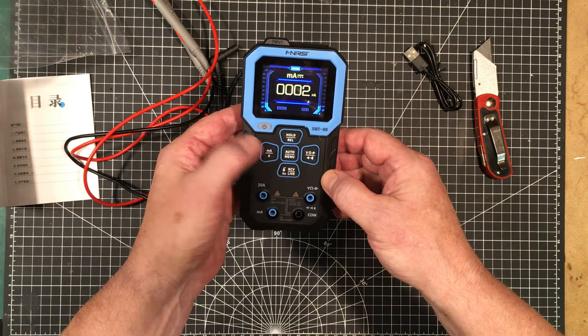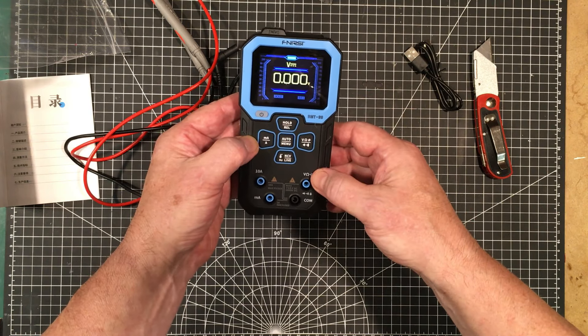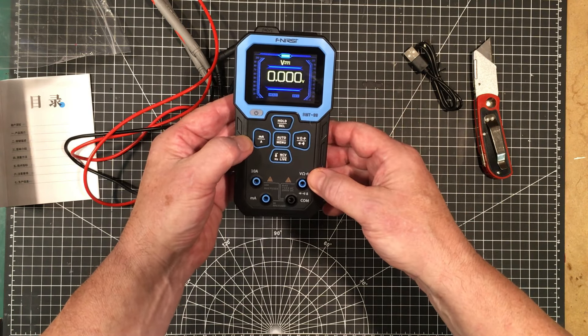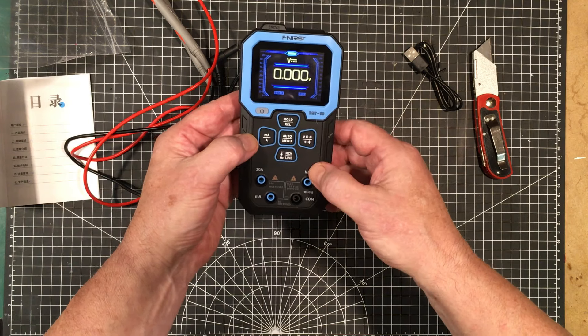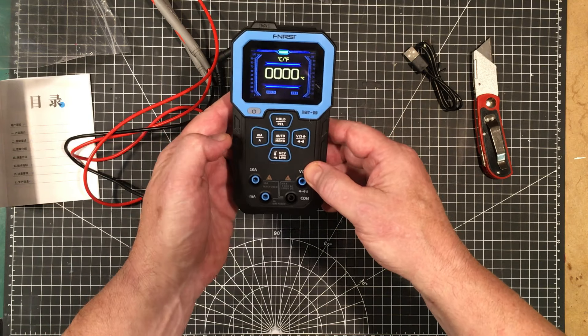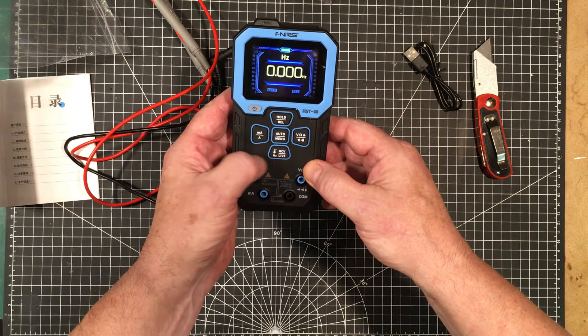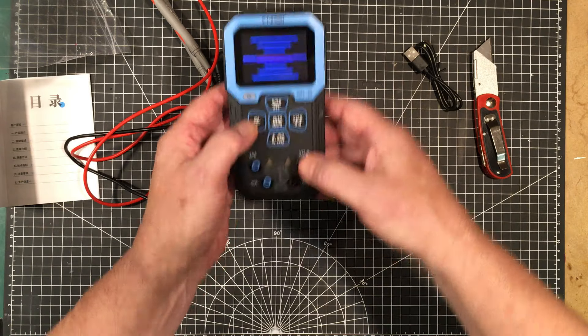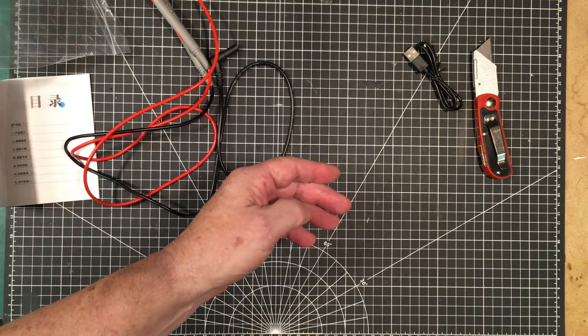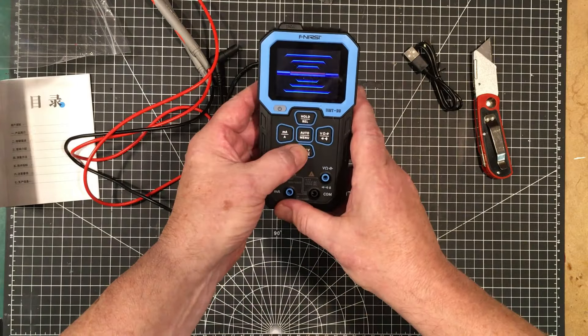Now if we click this it should go into current mode. This would be volts, ohms, capacitance, diodes, and continuity. NCV and live. Hertz. Is this NCV? Hold on. Yep. And it works.